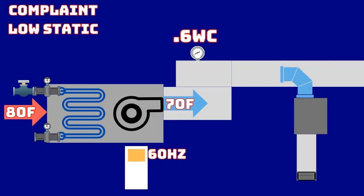So where do you start given these conditions? Why would we have only 0.6 inches WC with a 60 Hz fan? Keep in mind this is a commercial system maintaining a supply static pressure setpoint of one inch — that is the goal for this building.